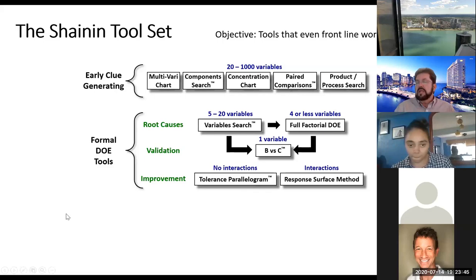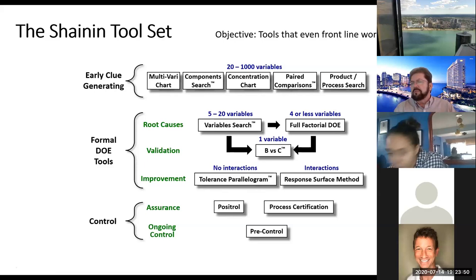The bottom line is you want to feed these things to try to narrow it down to a single variable or a group. If it's an interactive effect, you do a B versus C comparison to validate it. The two main improvement tools for Shannon are: if there are no interactive effects, use a tolerance parallelogram; and if there are interactive effects, use response surface methods — but very simple ones that frontline workers could use. There are also control tools — positrol and process certification — which I won't go into tonight, but if there's enough time I'll cover pre-control, which is a simplified method much simpler than control charting.